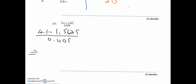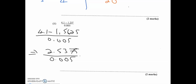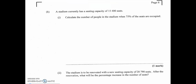Now taking the numerator: 4.1 minus 1.5625 gives 2.5375, all over 0.005. Dividing using the calculator, this turns out to be exactly 507.5. That's the answer for that part.